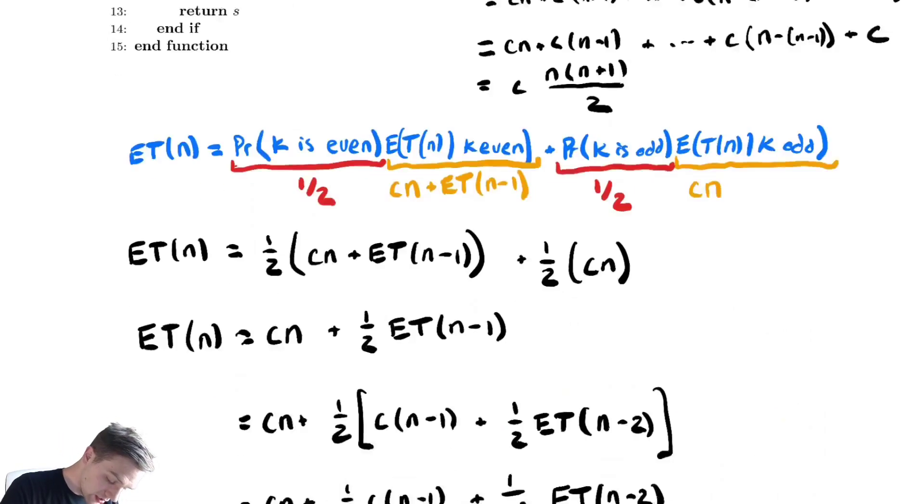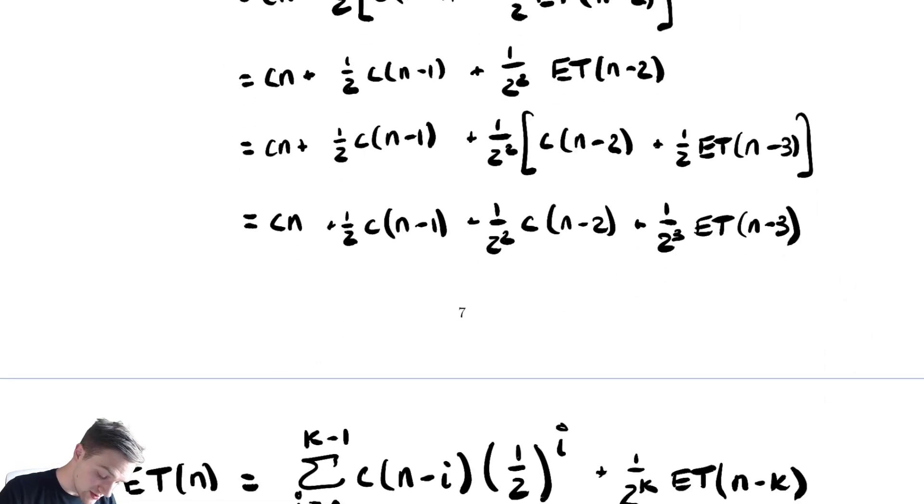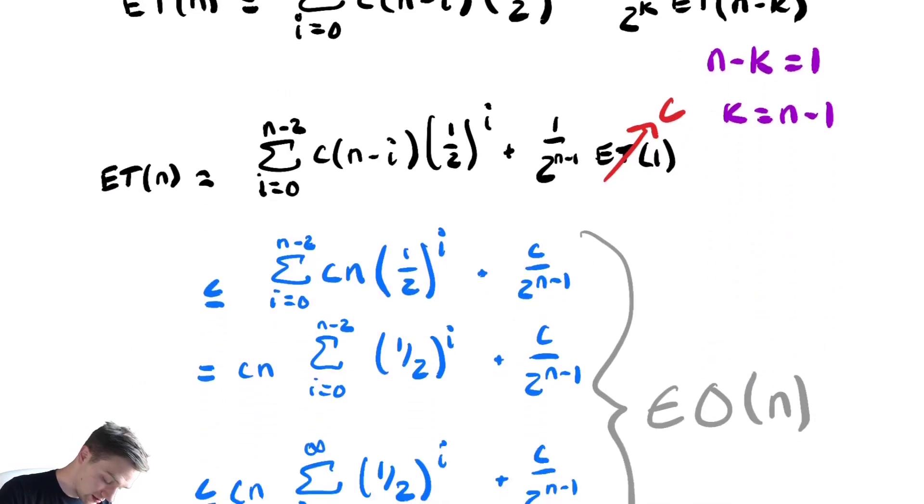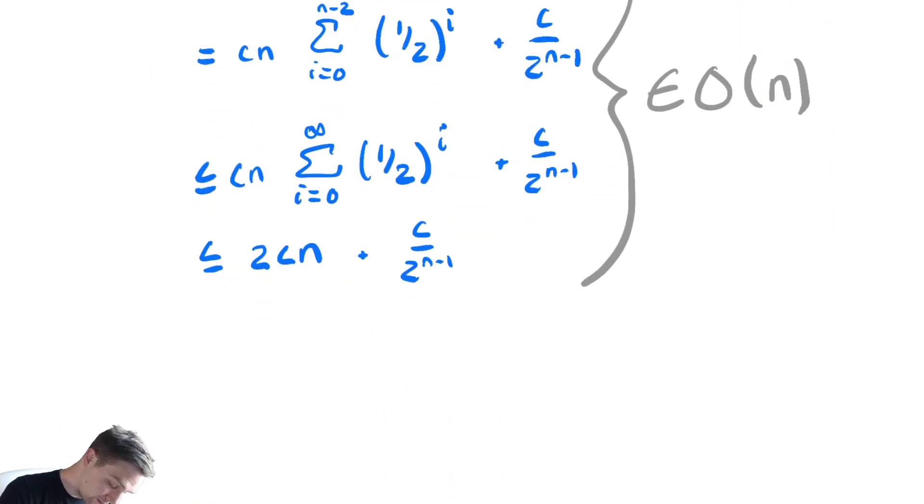So, you can see that directly from the code because of the for loop. Or, if we looked at our expansion of terms, the first term was cn. So, for sure, ET(n) is greater than or equal to that. So, we have also that ET(n) is greater than or equal to cn.